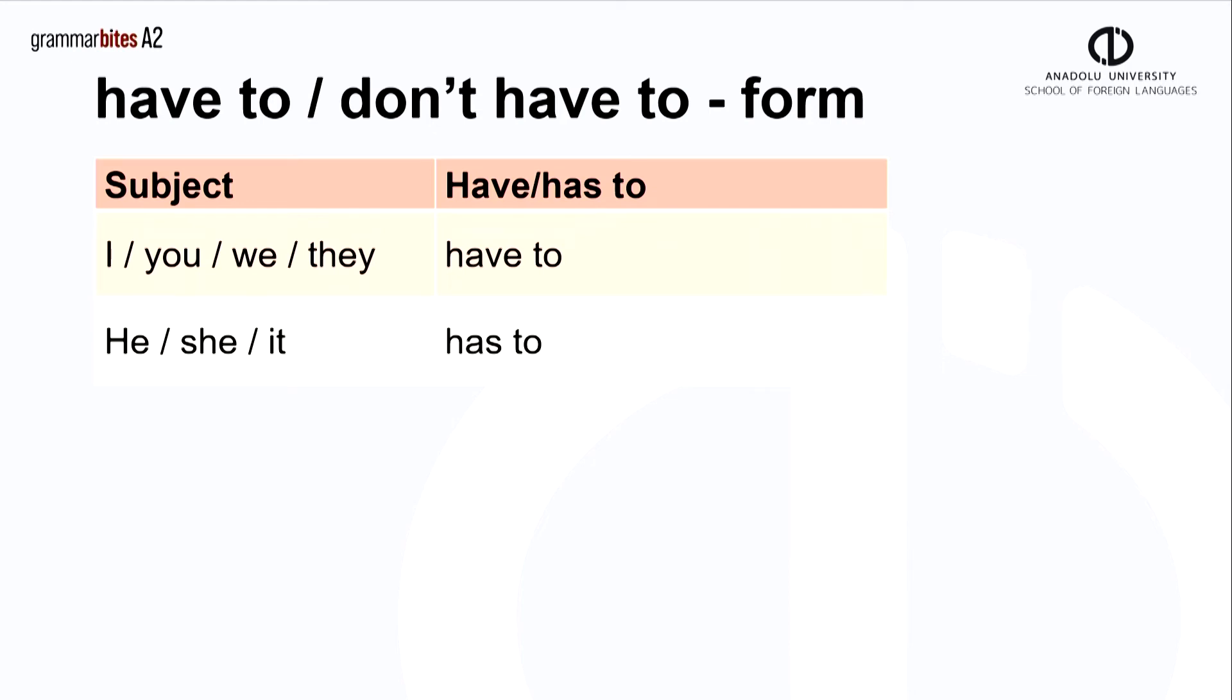For positive sentences, as you see, with the subjects I, you, we and they, we use have to. But with he, she, it, we use has to. This is normal for have, has in the present simple tense. For all subjects, we then add the infinitive of the verb, verb one.